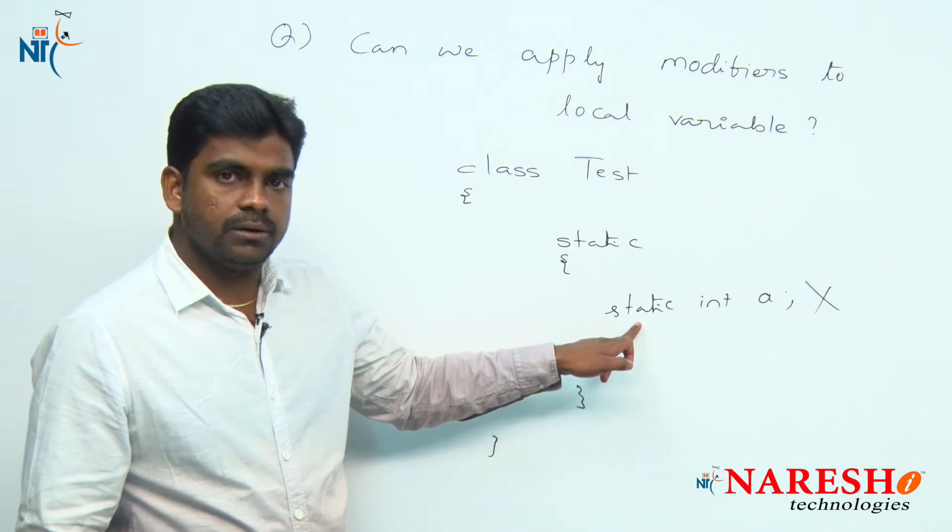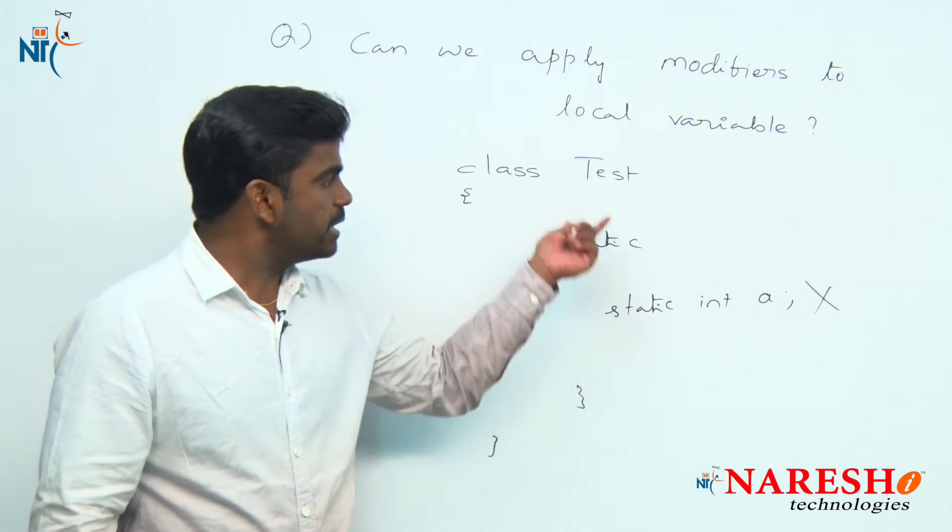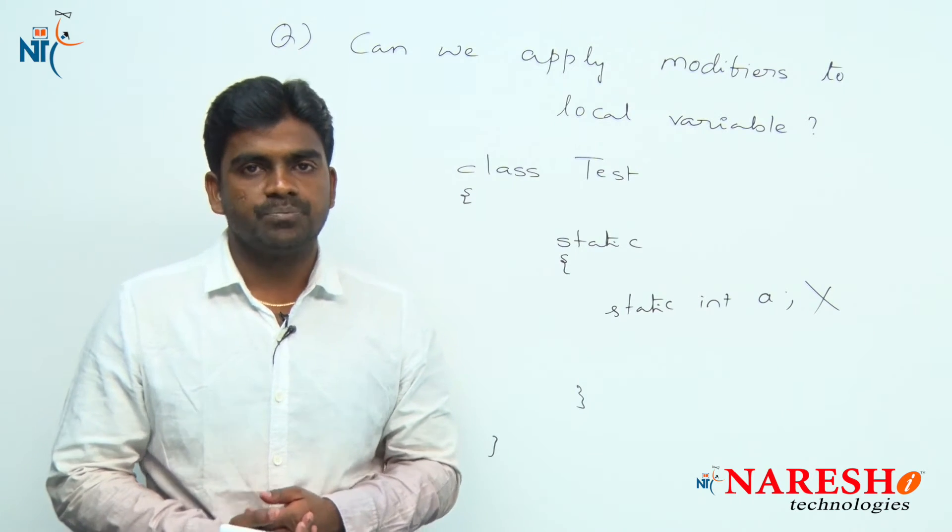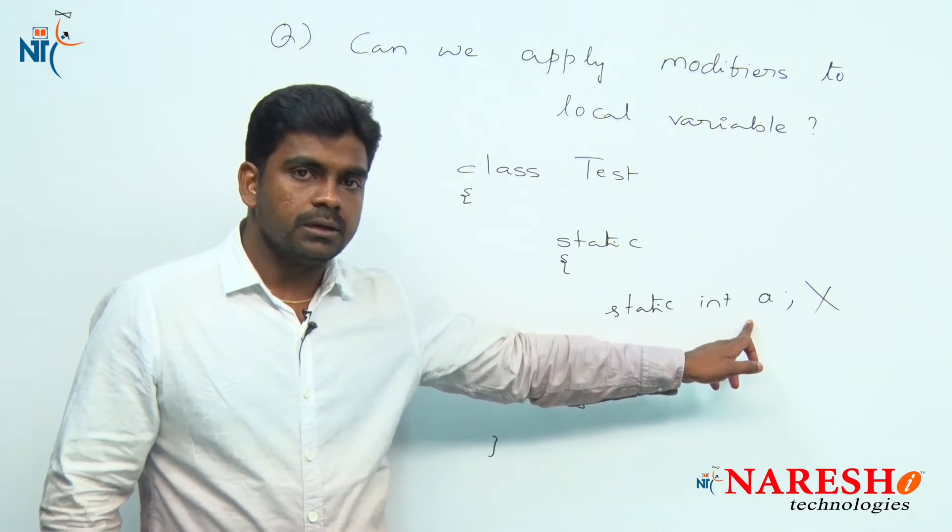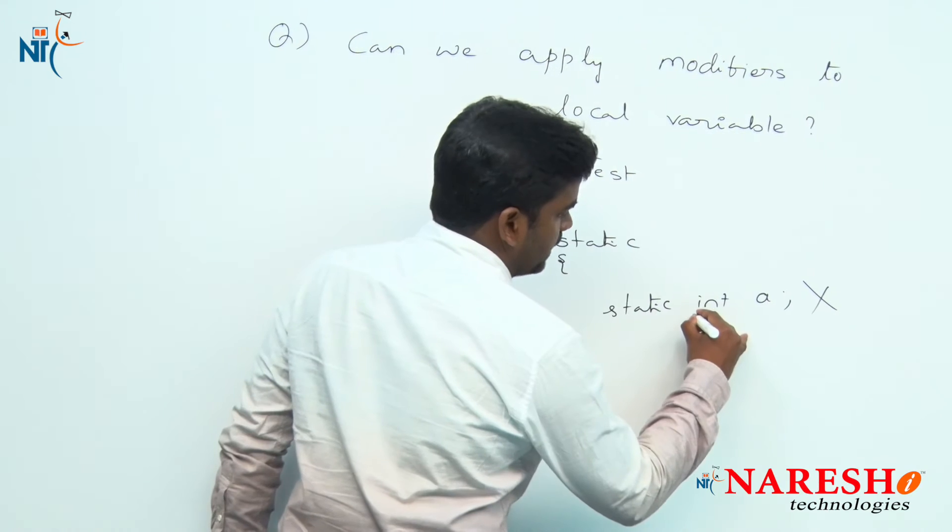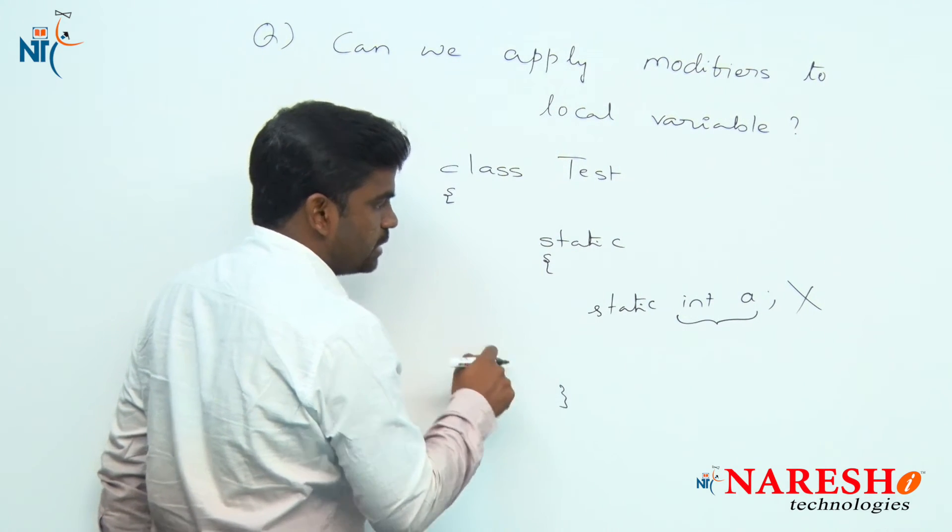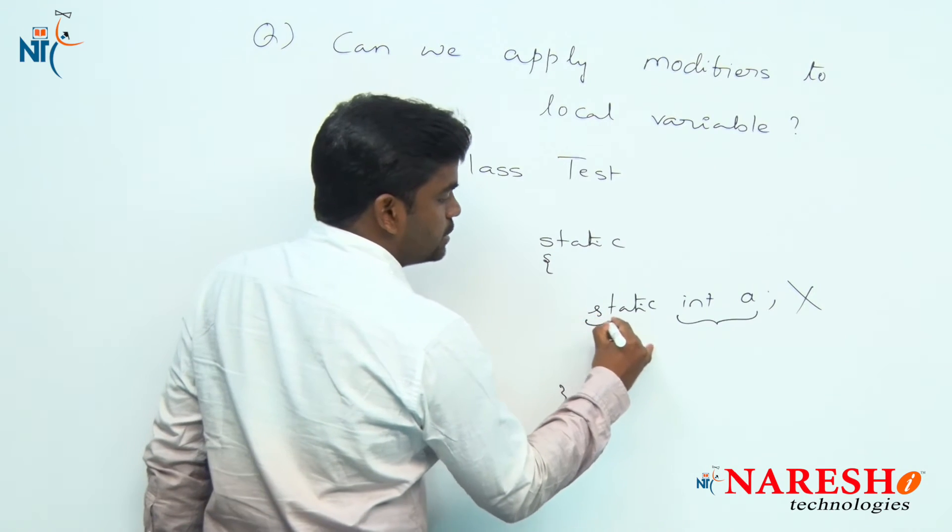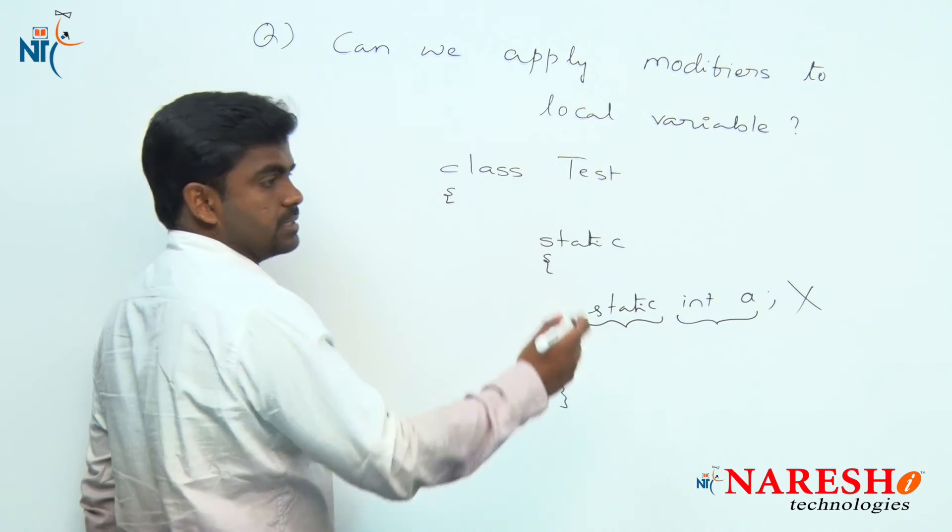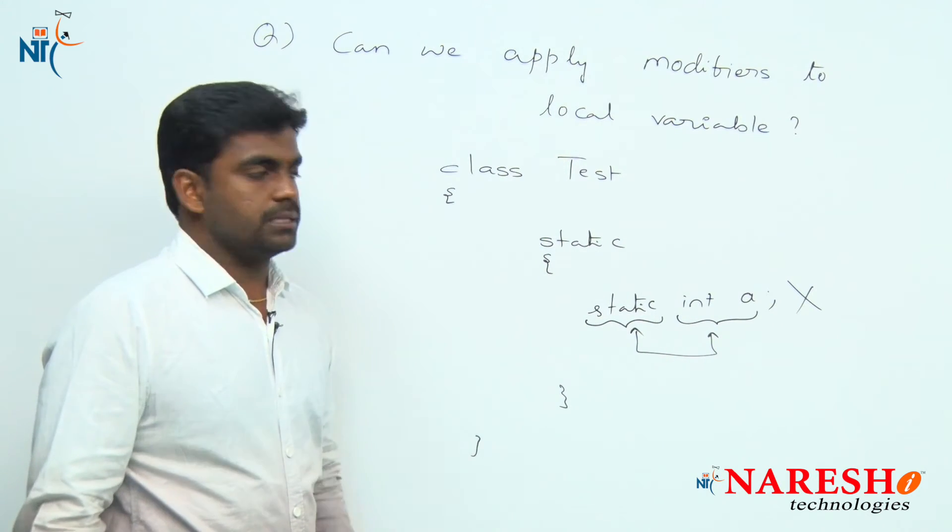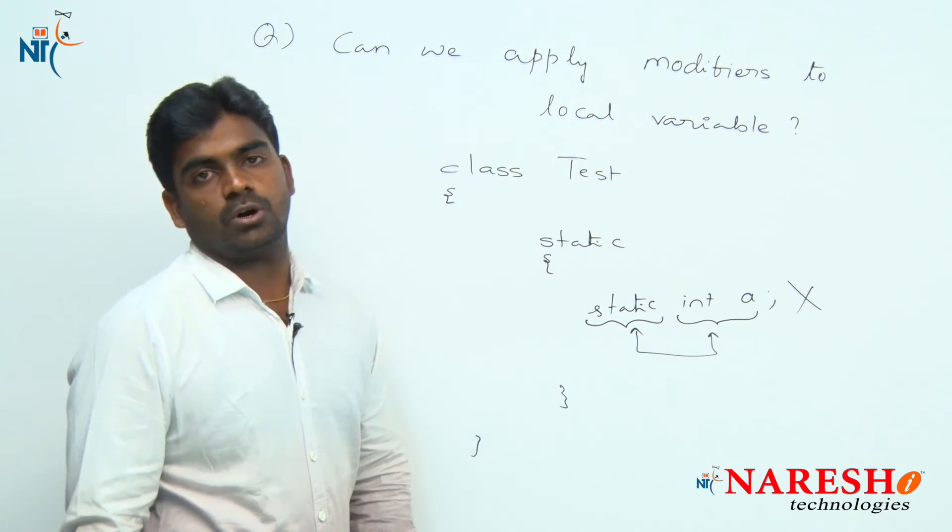Whenever you apply static variable, how will it become a global variable? How will it become a class level variable? It is impossible, it is a local variable. The intention of local variable is specific to a particular block, and the intention of static is that it belongs to the entire class. Both are mismatching, so how can we apply it? It is not allowed.